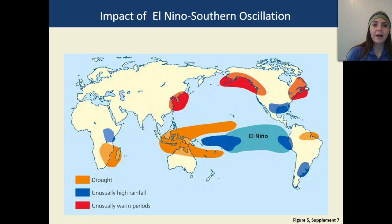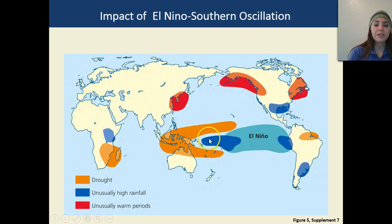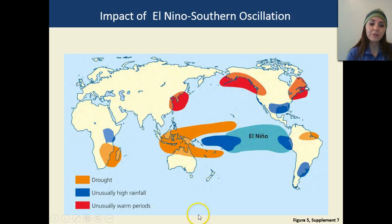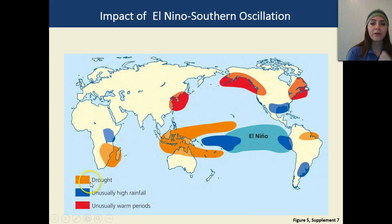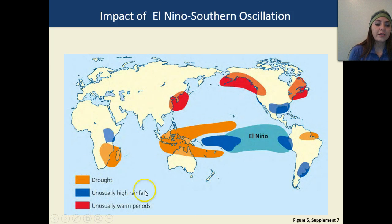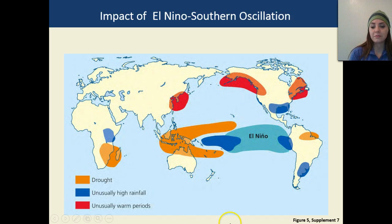The impact of El Niño — the southern oscillation — includes areas shown in orange where droughts occur where there typically weren't as many, blue areas that see unusually high rainfall, and pink areas that experience very unusually warm climates.